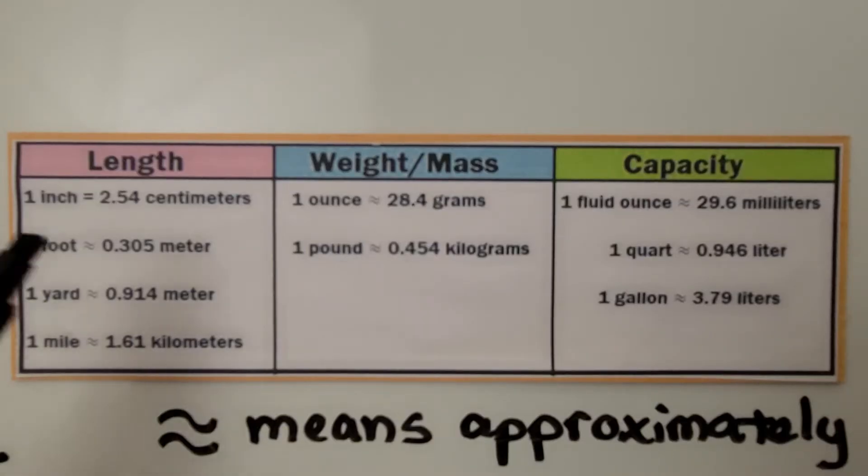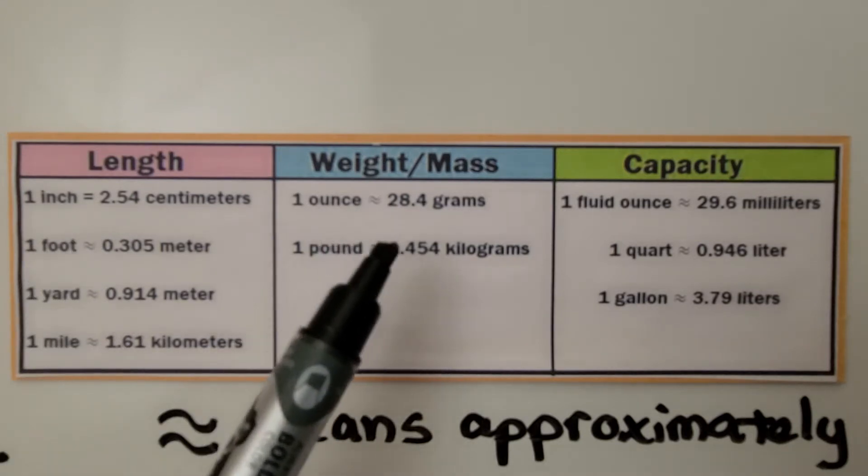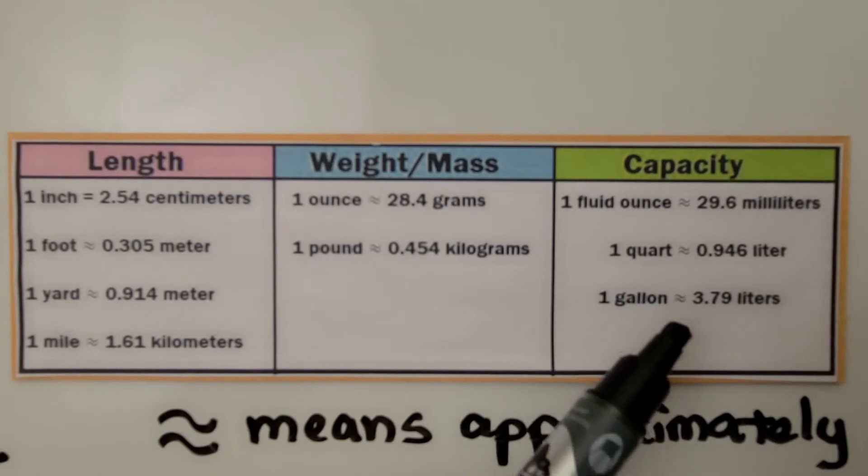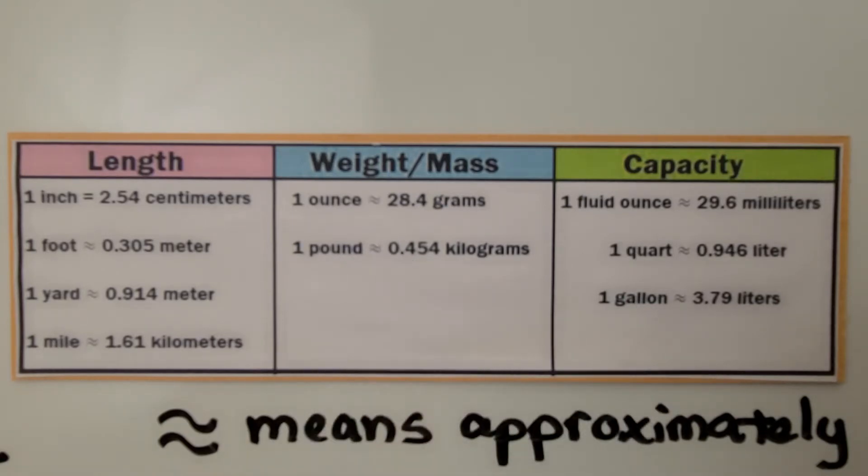As you can see, we have an equal sign for 1 inch equals 2.54 centimeters, but all the other equivalencies are using the approximation symbol because these decimals have been rounded, so they're not equal, they're approximate.